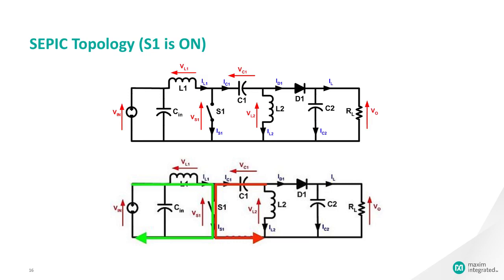Since S1 is a short while closed, and the instantaneous voltage VC1 is approximately VIN, the voltage VL2 is approximately minus VIN. Therefore, the capacitor C1 supplies the energy to increase the magnitude of the current in IL2, and thus increase the energy stored in L2.